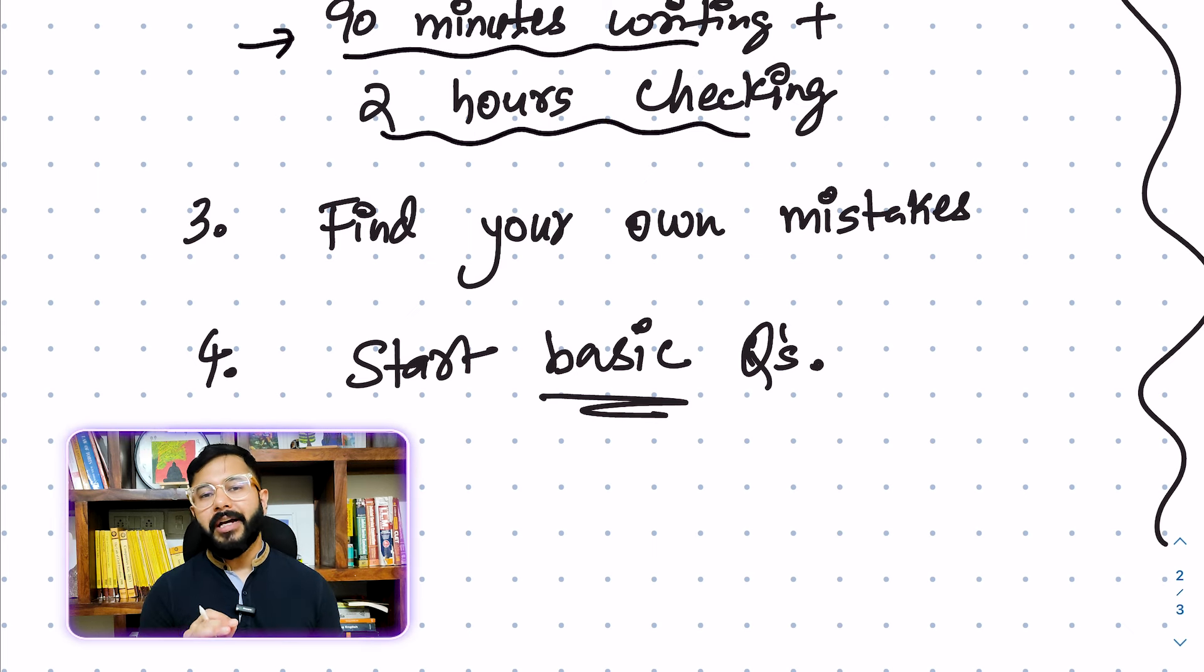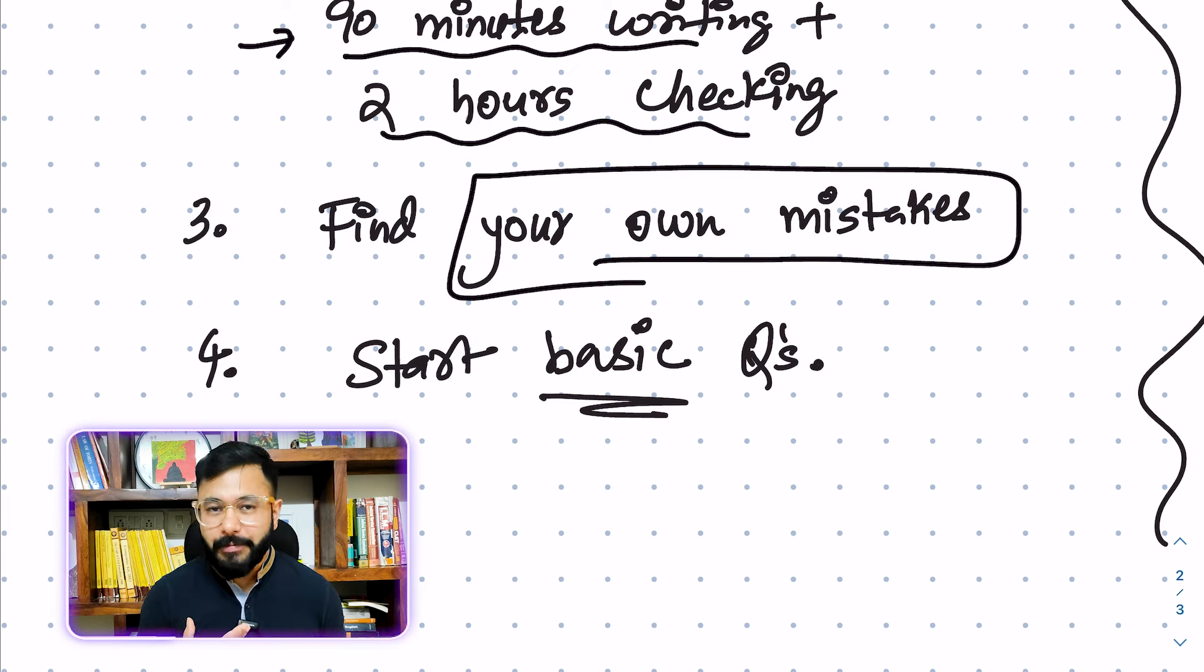Point number three. How to write is find your own mistakes. I gave you the example of ChatGPT. There are multiple others. You can use a human intervention like me. You can use a robotic intervention like ChatGPT or anything else as well. But focus on finding your mistakes. Focus on figuring out what is it that you've done right and what is it that you've not done right in this question's answer.